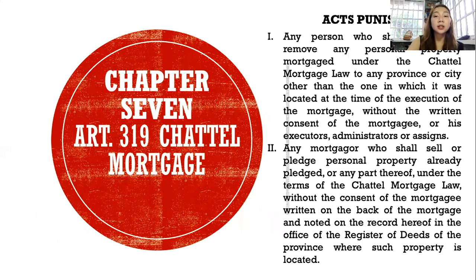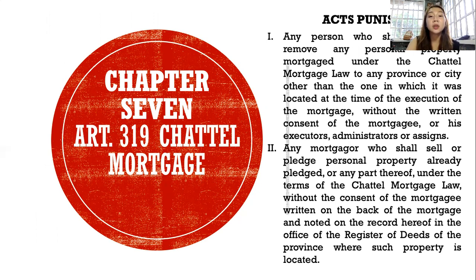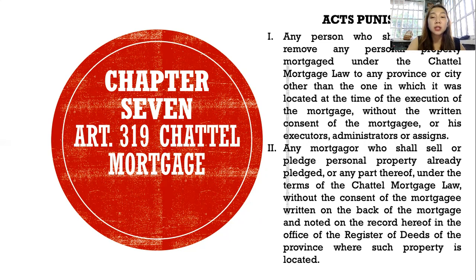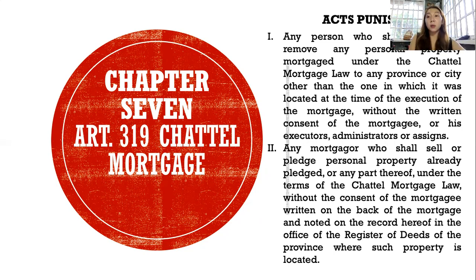Article 319 covers removal, sale, or pledge of mortgaged property. Any person who shall knowingly remove any personal property mortgaged under the Chattel Mortgage Law to any province or city other than the one where it was located at the time of the execution of the mortgage, without the written consent of the mortgagee; and any mortgagor who shall sell or pledge personal property already pledged under the terms of the mortgage without the written consent of the mortgagee.